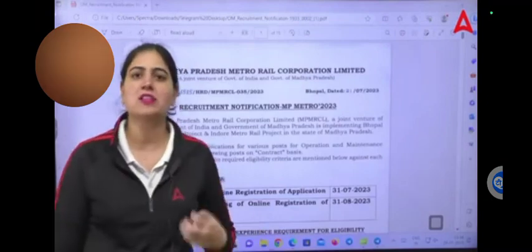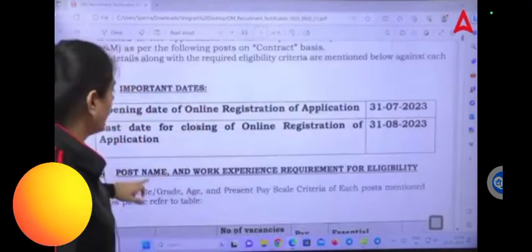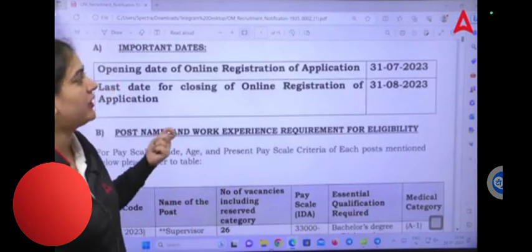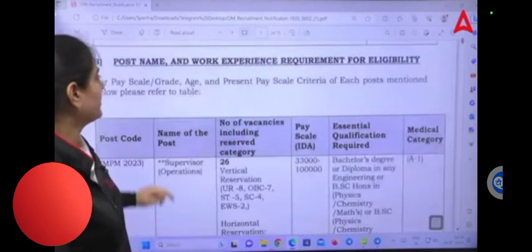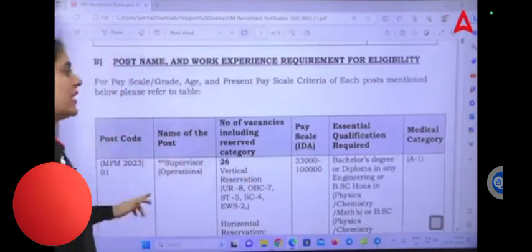When can you apply for post, age, qualification, etc. I will show you the form filling here. The form filling is from 31st July. You can see the post name and work experience required for eligibility. See which is your vacancy, what salary, and your qualification.